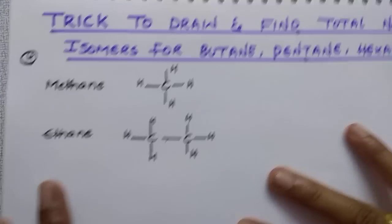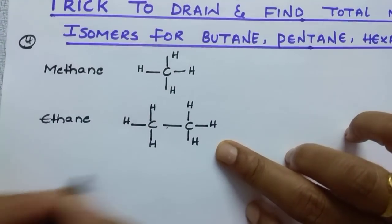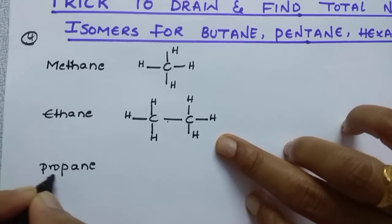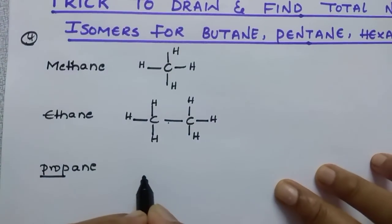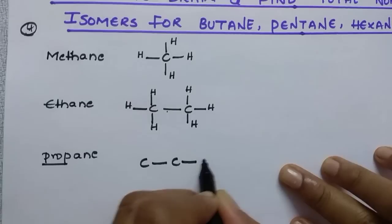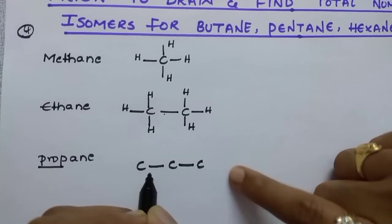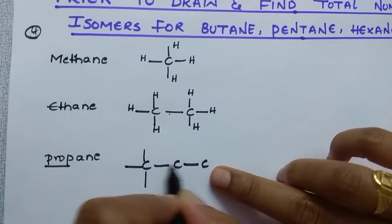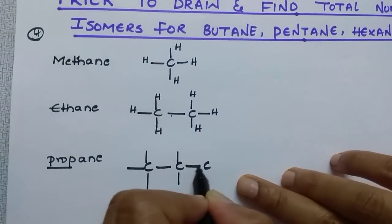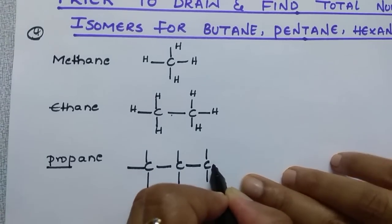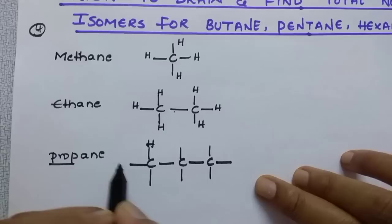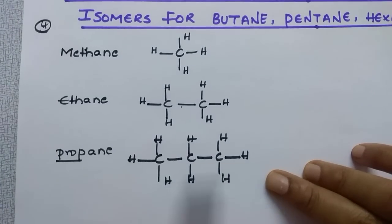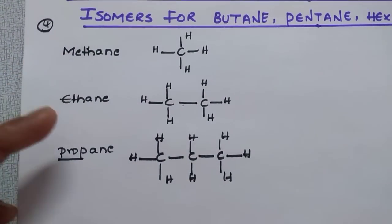In the place of each remaining bond, just put one hydrogen. Next, propane — 'prop' is the root word which consists of 3 carbons. Just write 3 carbons. Carbon valency is 4. The first carbon has one bond, so place 3 hydrogens. The middle carbon has 2 bonds, so place 2 hydrogens. The last carbon has one bond, so place 3 hydrogens. These are the structures for methane, ethane, and propane.